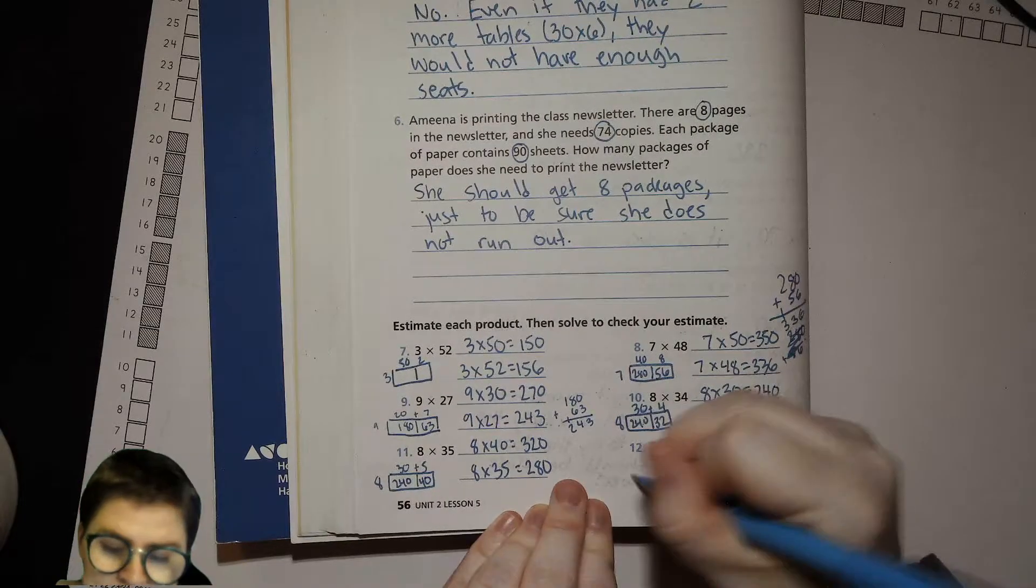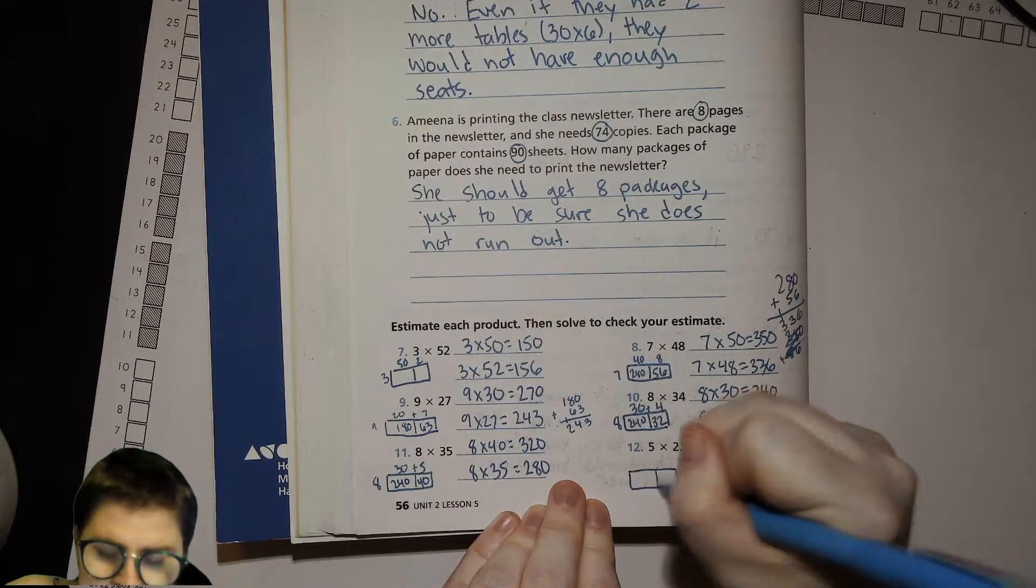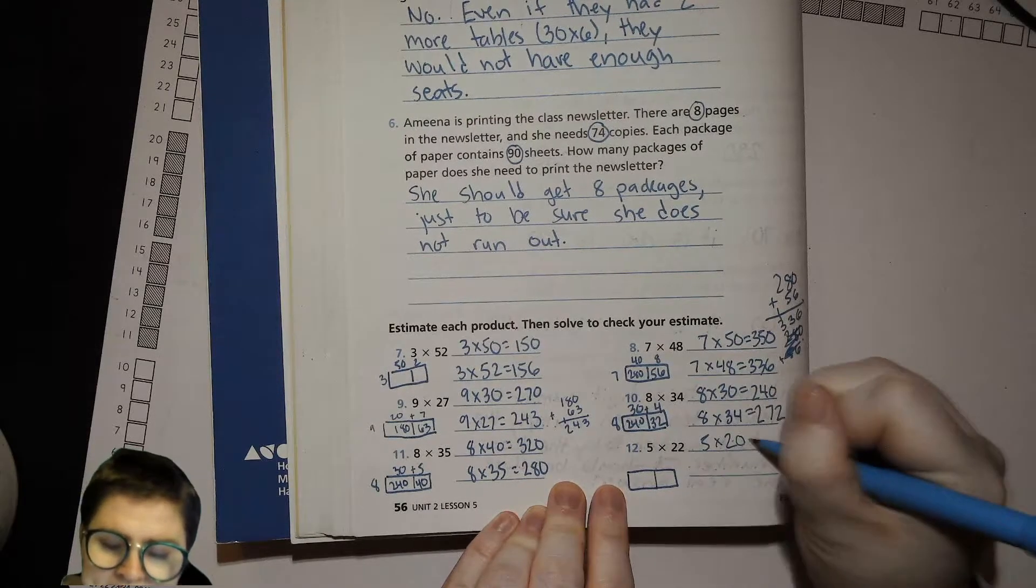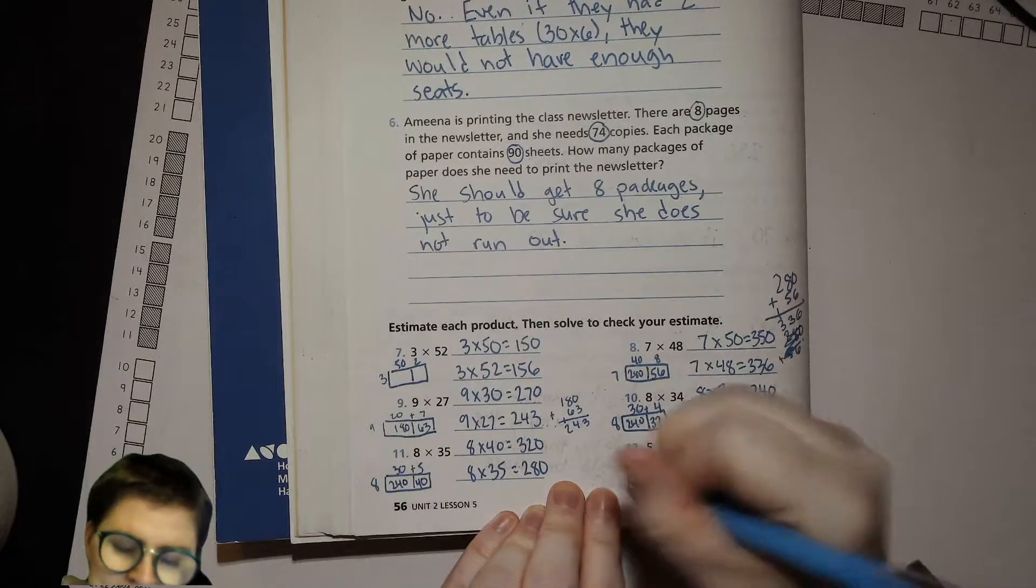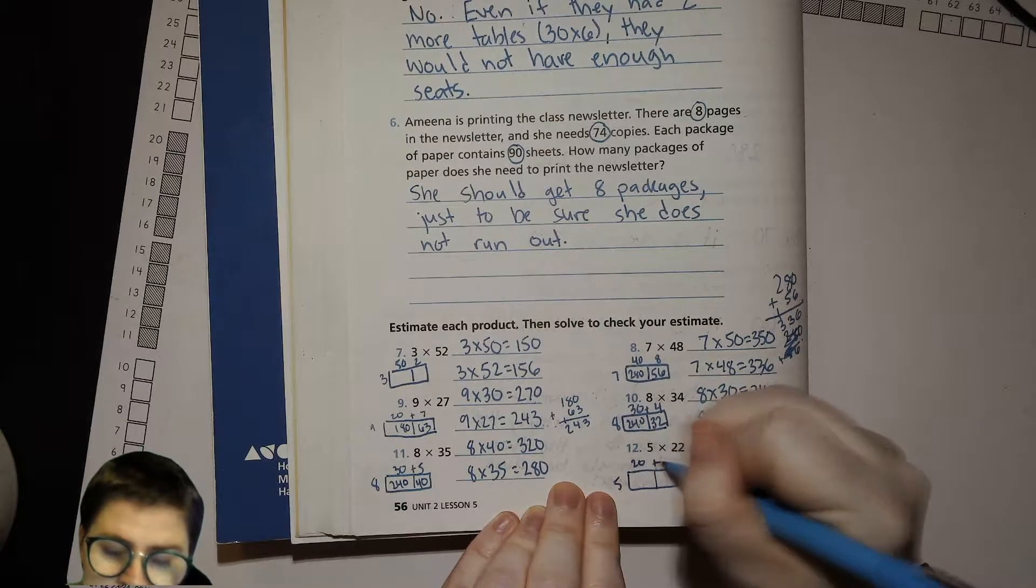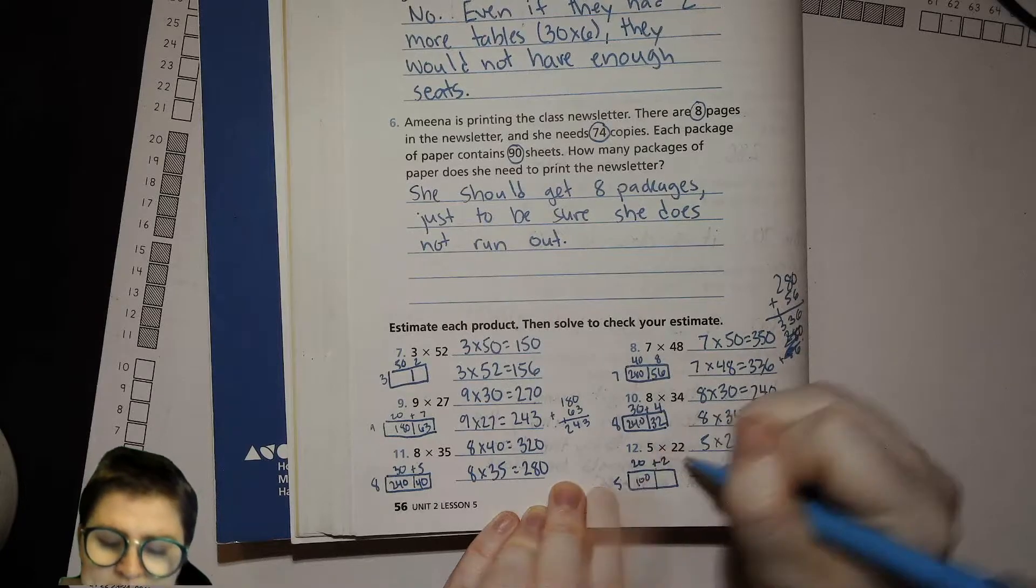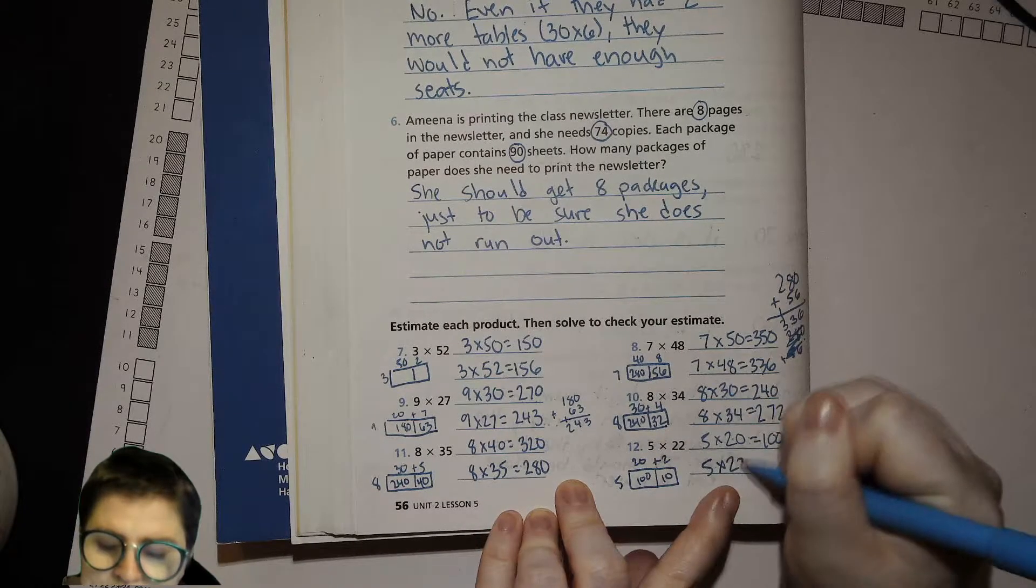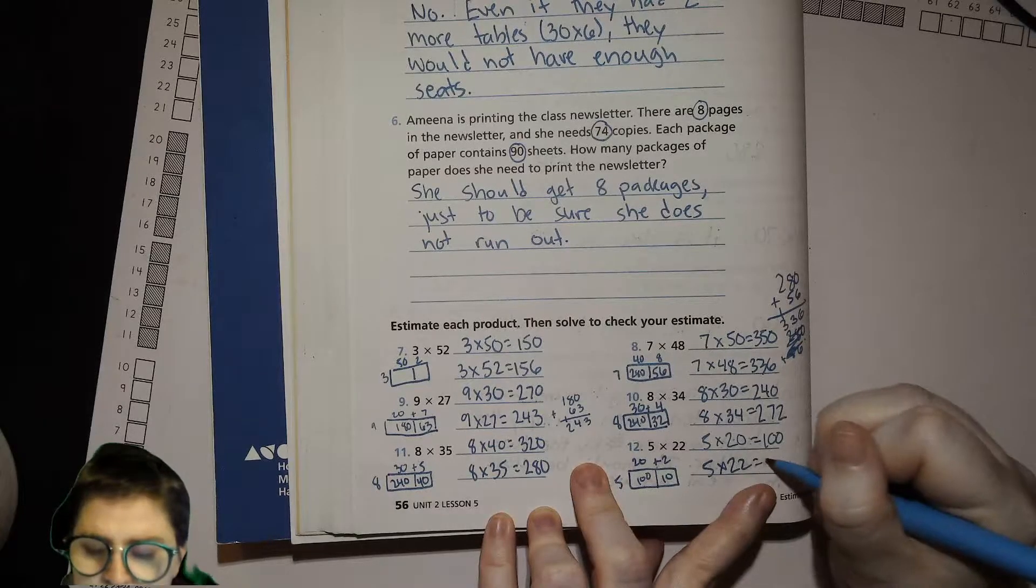Last one. Here we go. 5 times 20 is 100. 5, 2. So that's 100. 5 times 2 is 10. So 5 times 22 equals 110.